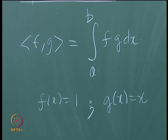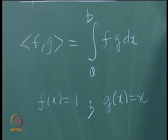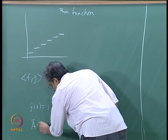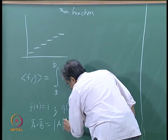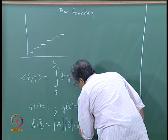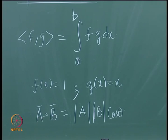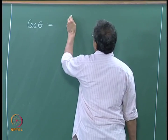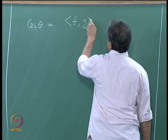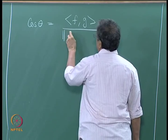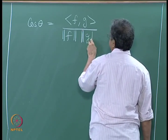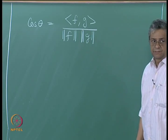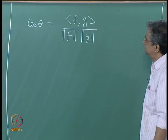Once you have defined the dot product, we can use the definition from geometry where a dot b equals magnitude a times magnitude b times cosine of the included angle. Similarly, the cosine of the angle between two functions would be the dot product f·g divided by the norm of f times the norm of g, analogous to what we did with vectors.